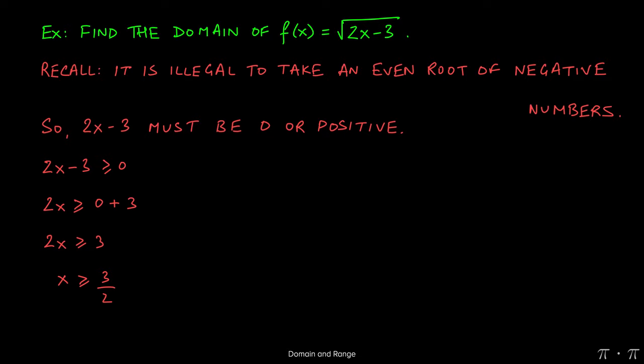Remember, when you're solving inequalities, if you multiply or divide by a negative number, you have to change the direction of the inequality. But in this case, the 2 was a positive, so when I divided it over to the other side, the inequality stays the same.